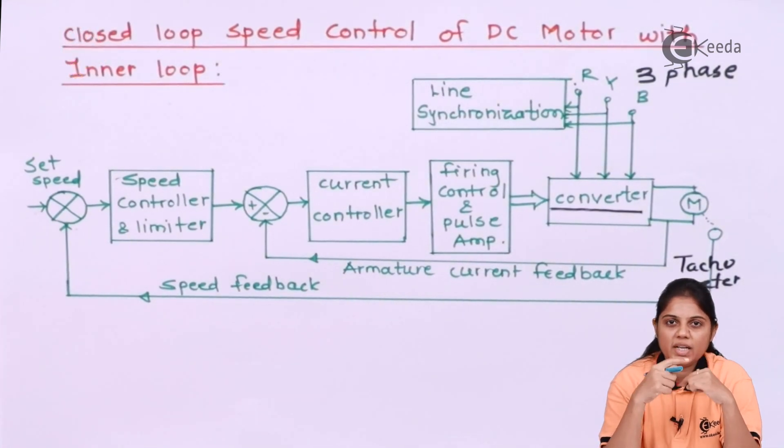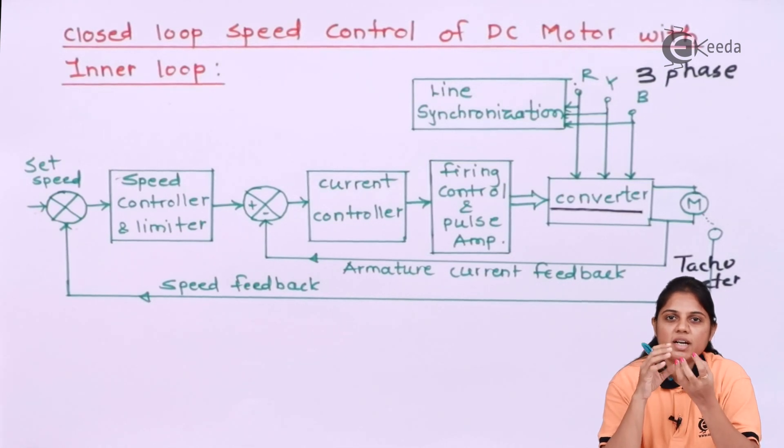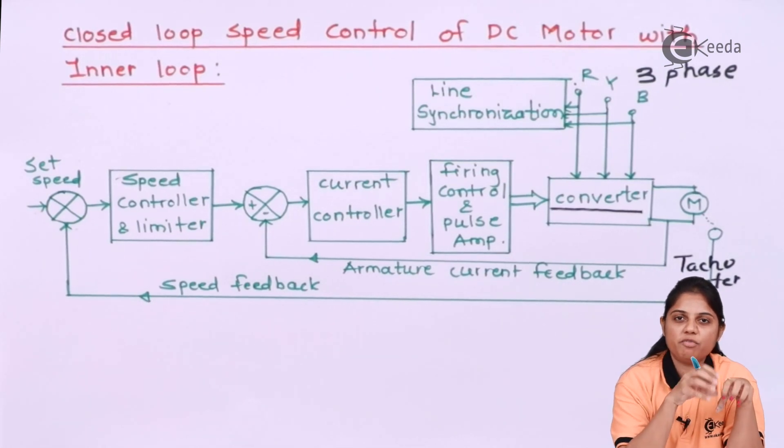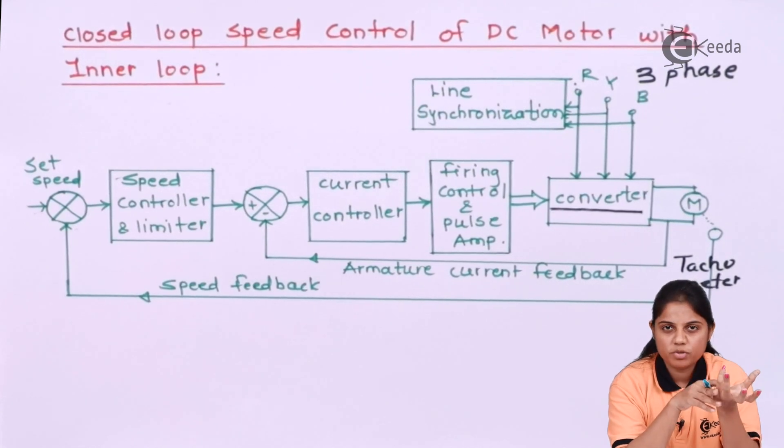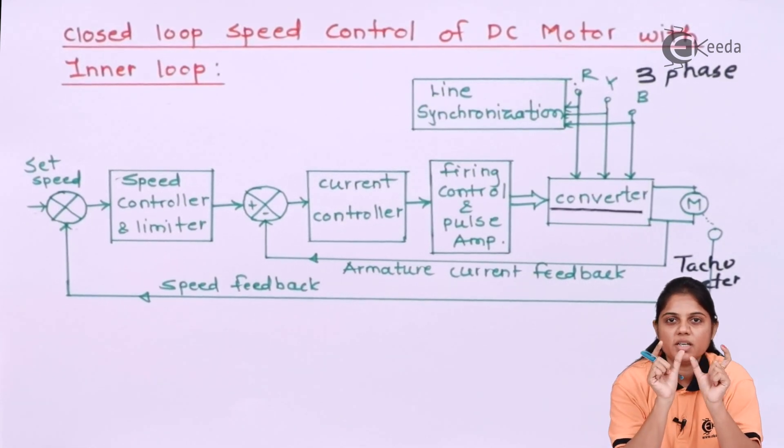If the motor is rotating at a continuous speed and the tacho generator is continuously measuring the speed and feeding it back to the input side, that will be a DC output voltage between 0 to 10.